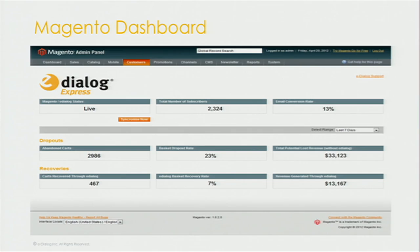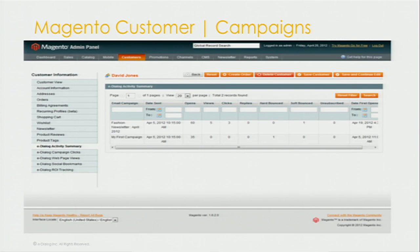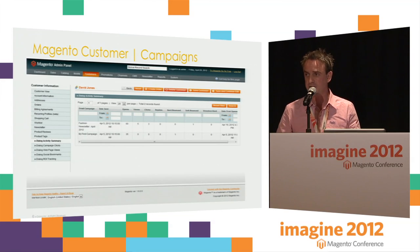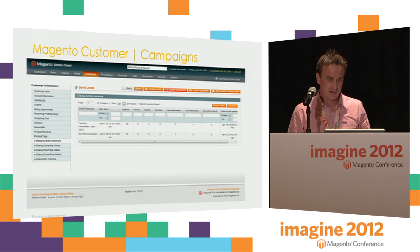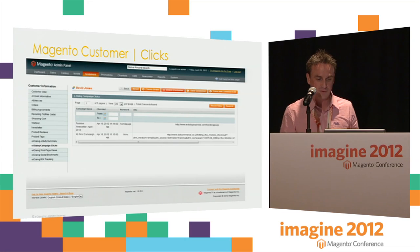Just to bring it to life — within the customer record here, we can see dropouts at checkout, the percentage and the revenue you would have earned. From our drip campaigns and nudges, you can see the recovered baskets and the monetary sums we've pulled in. Under the customer record, we now have eDialog-specific menu items — you can see the clicks and opens from each different campaign for that particular customer, giving you a real insight into what they're doing.